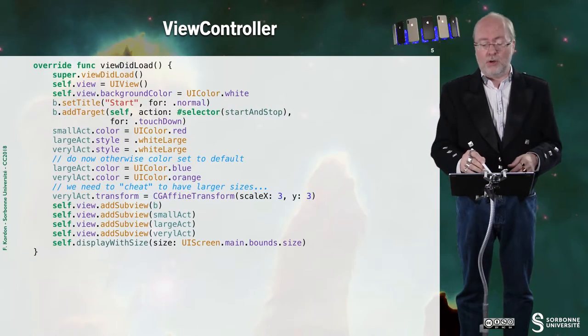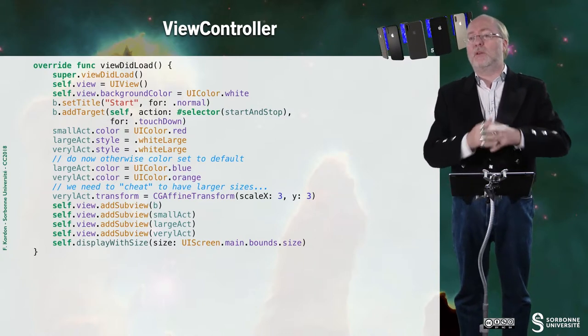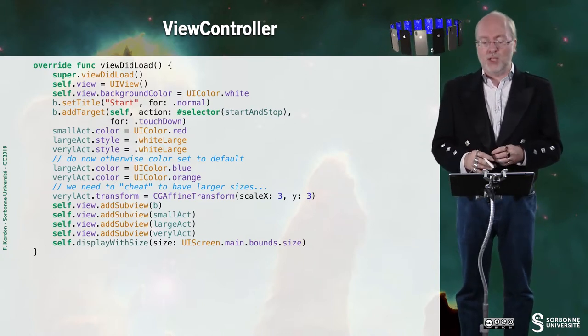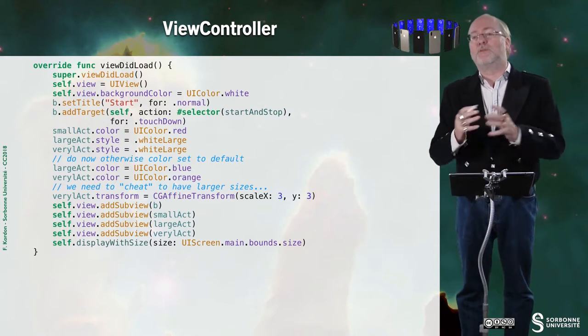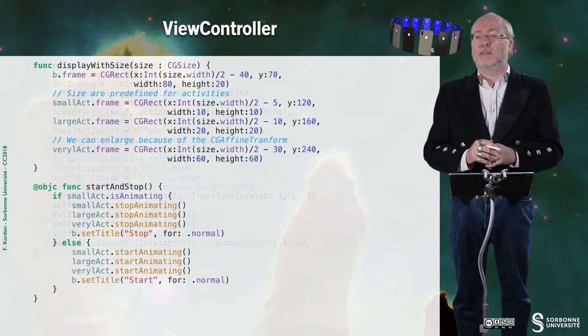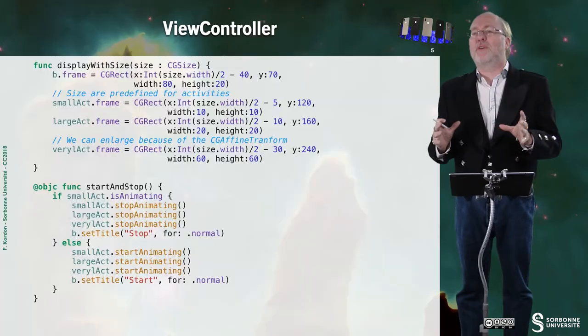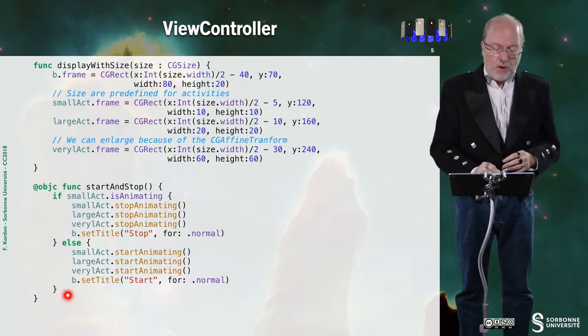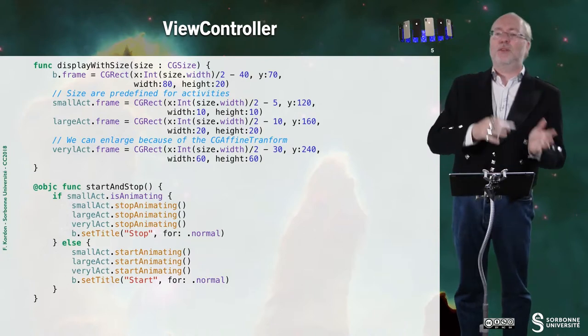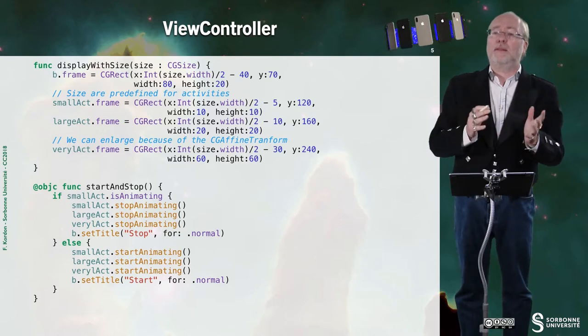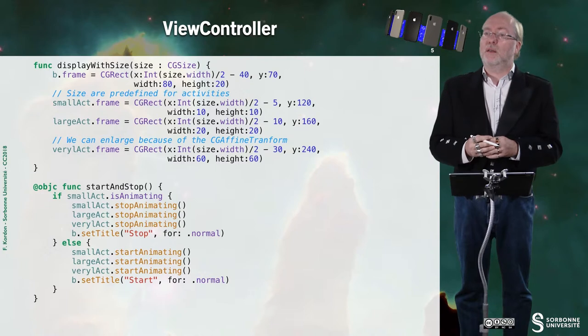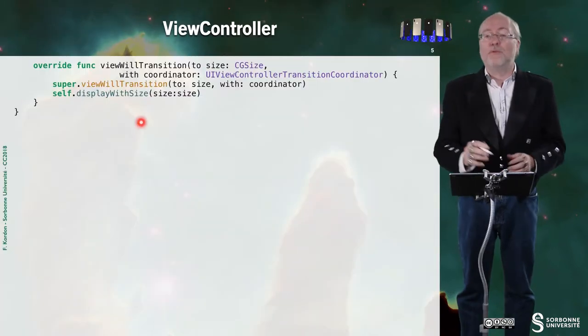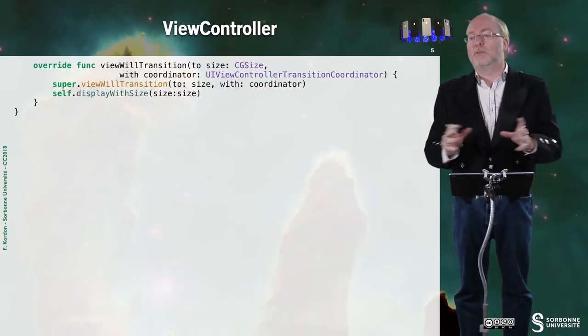For the rest of the code, everything is quite natural at this stage: association of a method to a button, et cetera. The second function is very classical — just setting up the frames. The last one is a flip-flop that either animates these UIActivityIndicatorViews or stops them, just by using the isAnimating boolean indicator. Finally, I have viewWillTransitionToSize — you know now how it works.